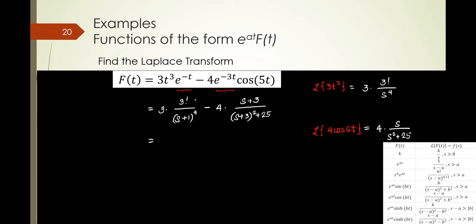So if you want to arrange this, what's 3 factorial? That's 3 times 2 times 1. So that is 6 times 3. So you have 18 over s plus 1 raised to the 4 minus 4 times s plus 3 all over s plus 3 quantity squared plus 25. That is your function of s applying the first shifting theorem. So that means what I did first in here, this is the first step. And then I applied the first shifting theorem. Okay.